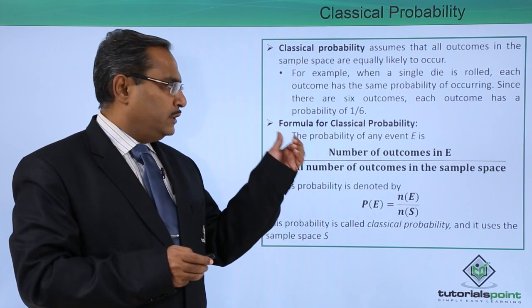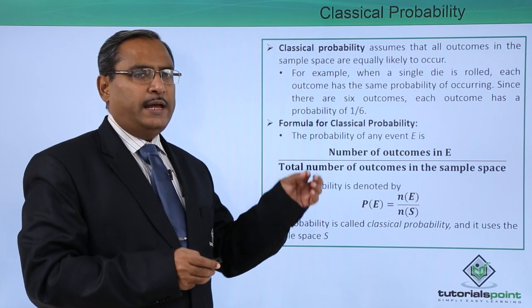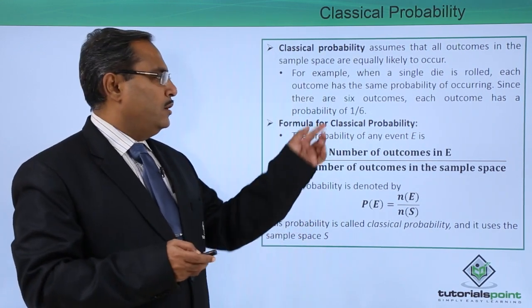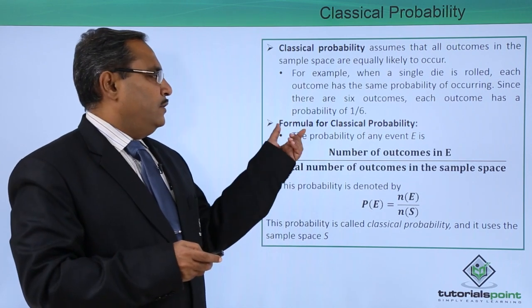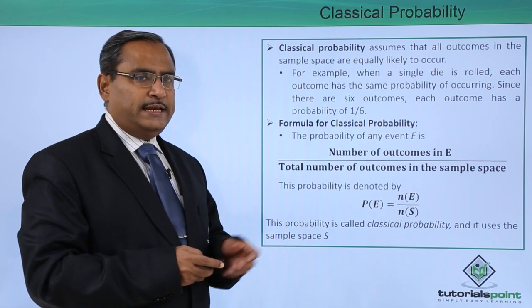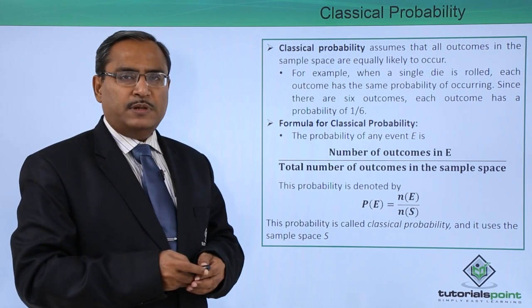The probability for this particular die, when it will be rolled, the probability of having a particular value, let it be 4 or 5, will be 1 by 6. The formula for classical probability is the number of outcomes in E and total number of outcomes in the sample space.